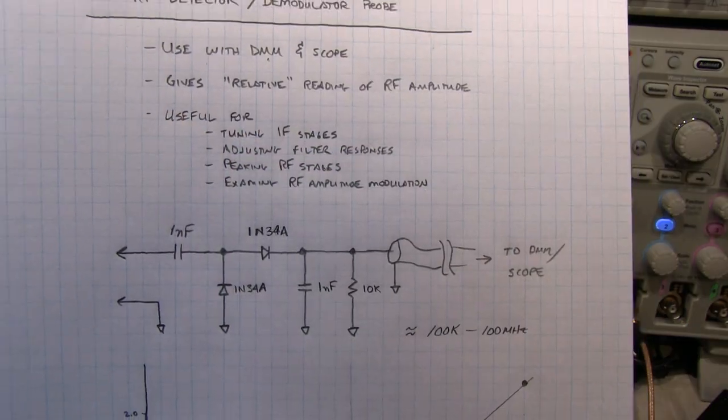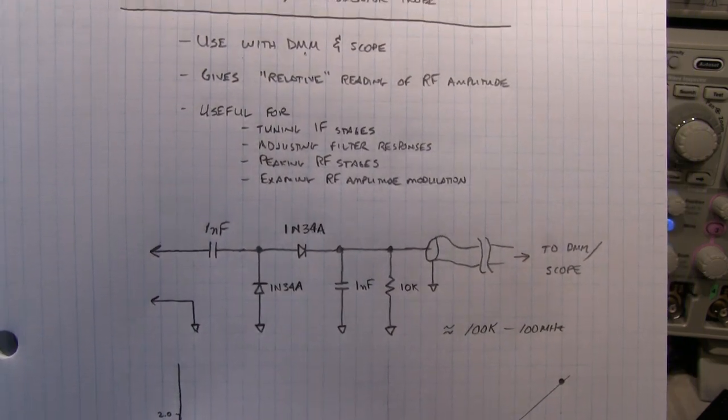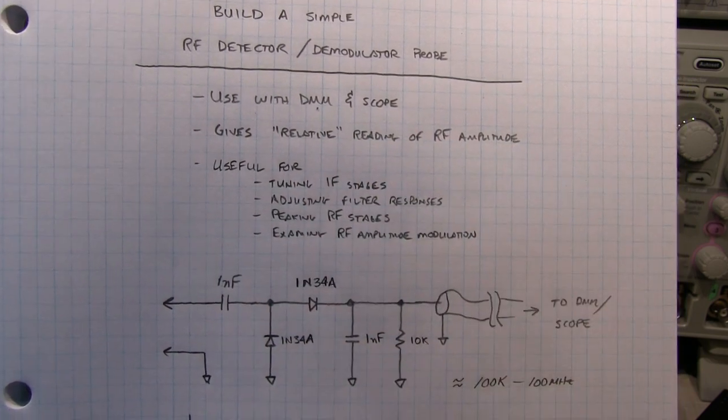Now, because we're using diodes to do the detection here, the response isn't going to be perfectly linear. So that's why I say it kind of gives a relative reading of RF amplitude.